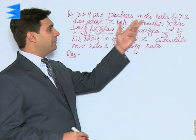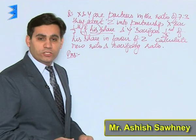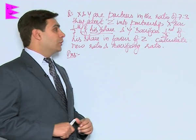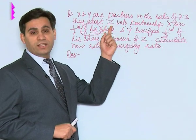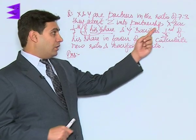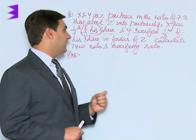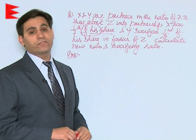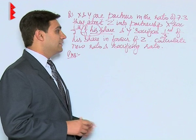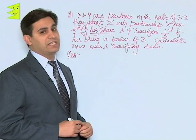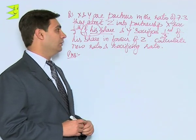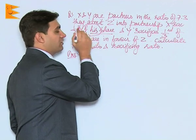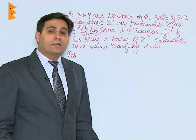Coming to a different question: X and Y are partners sharing profits and losses in the ratio of 7:3. They admit Z into partnership. In this case, Z's share is not mentioned directly. X sacrifices 1/7th of his share and Y sacrifices 1/3rd of his share in favor of Z. We are required to calculate the new ratio and the sacrificing ratio. X sacrifices 1/7th of his share.